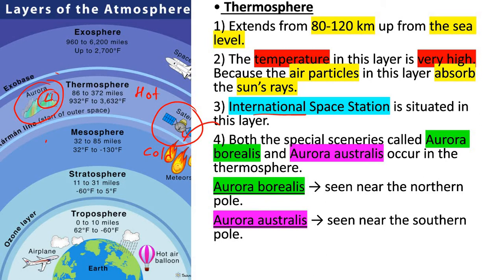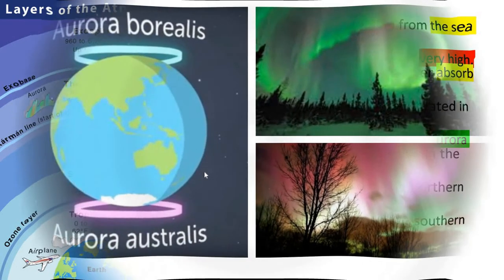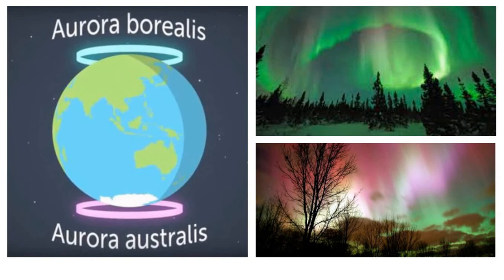There are two types of auroras. The first is aurora borealis, which is seen near the northern pole, and the other is aurora australis, which is seen near the southern pole. You can see aurora borealis here and aurora australis near the south pole — they are quite beautiful and magnificent sceneries.